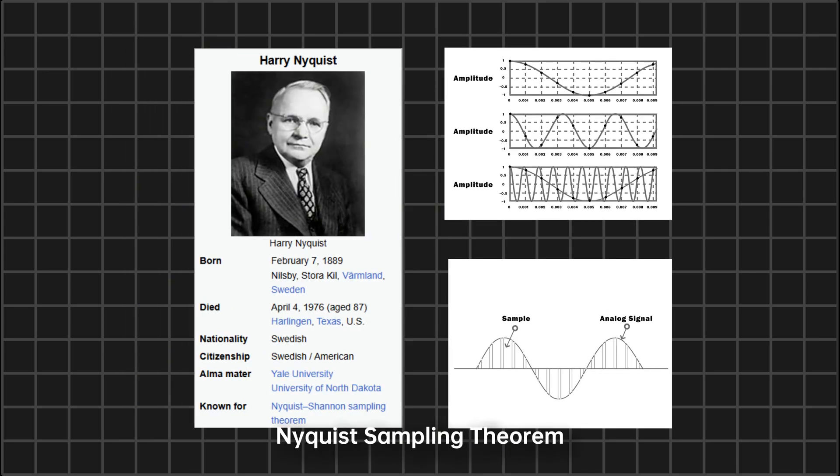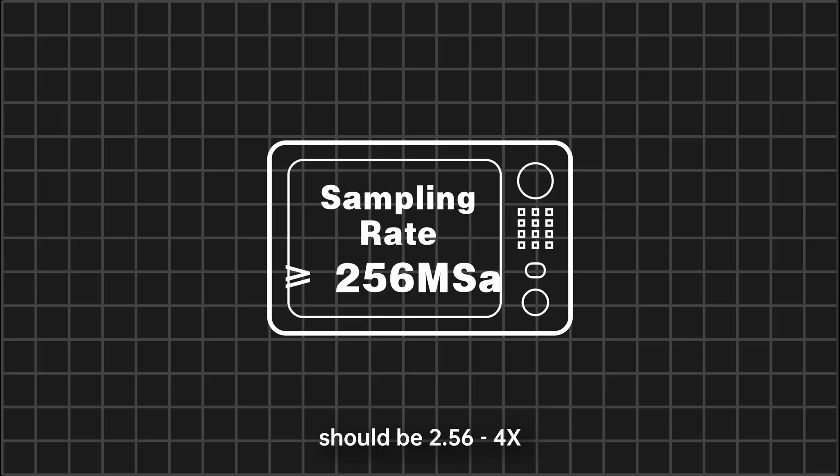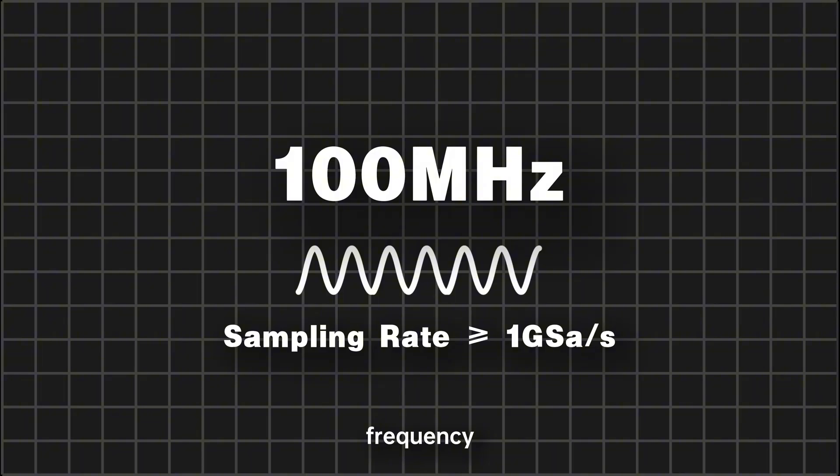According to Nyquist's sampling theorem, the sampling rate should be 2.56 to 4 times the bandwidth, or roughly 10 times the original signal frequency.